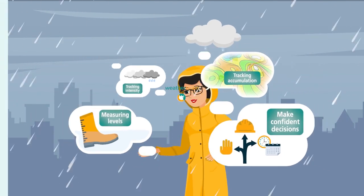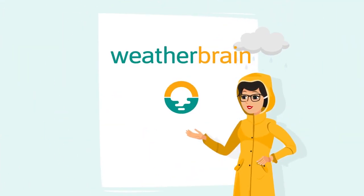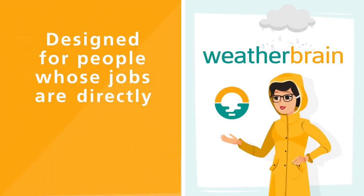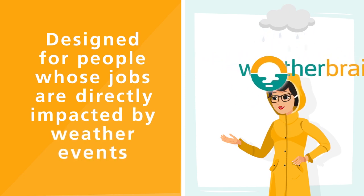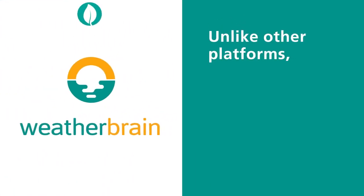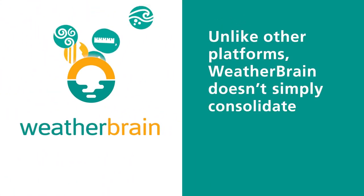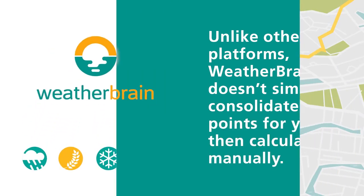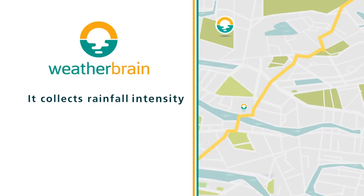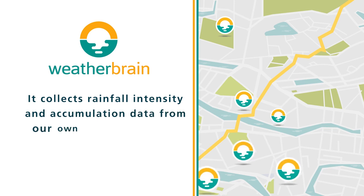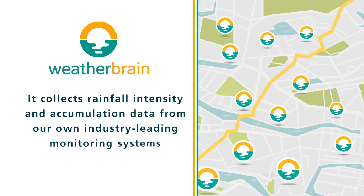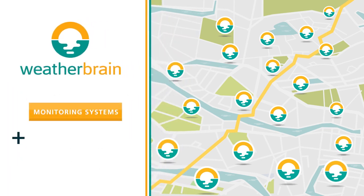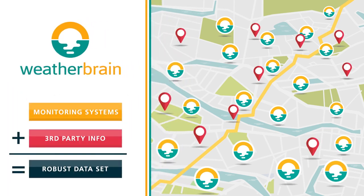And now, there is, with WeatherBrain. WeatherBrain is a system designed for people like you whose jobs are directly impacted by weather events. Unlike other platforms, WeatherBrain doesn't simply consolidate data points for you to then calculate manually. It collects rainfall intensity and accumulation data from our own industry-leading monitoring systems in and around your location, and can even pull geo-relevant third-party info for a more robust dataset.